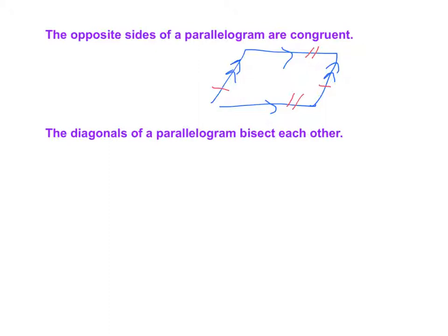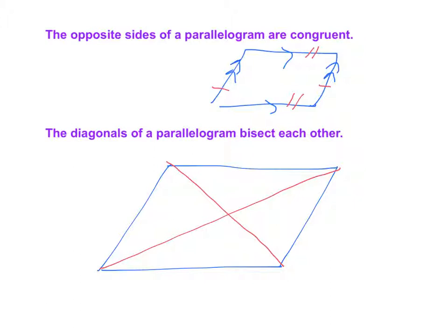The diagonals of a parallelogram bisect each other. If we draw in some diagonals here and here, you can see that this is going to be congruent to this, and this is going to be congruent to this.